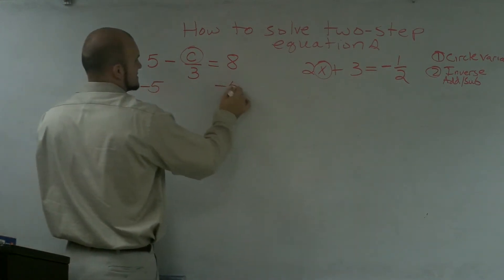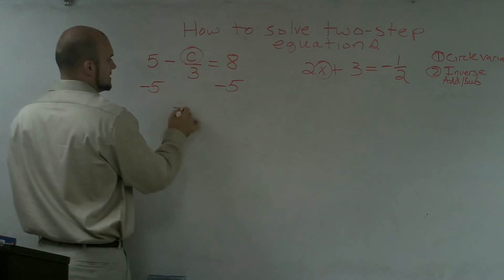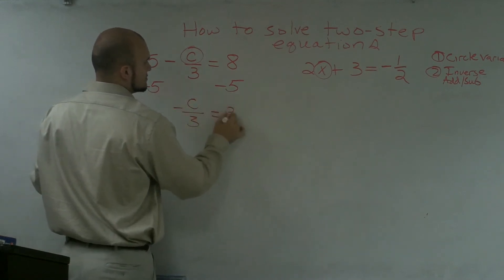The 5 is not being subtracted on both sides. Therefore, I'm left with negative c over 3 equals 3.